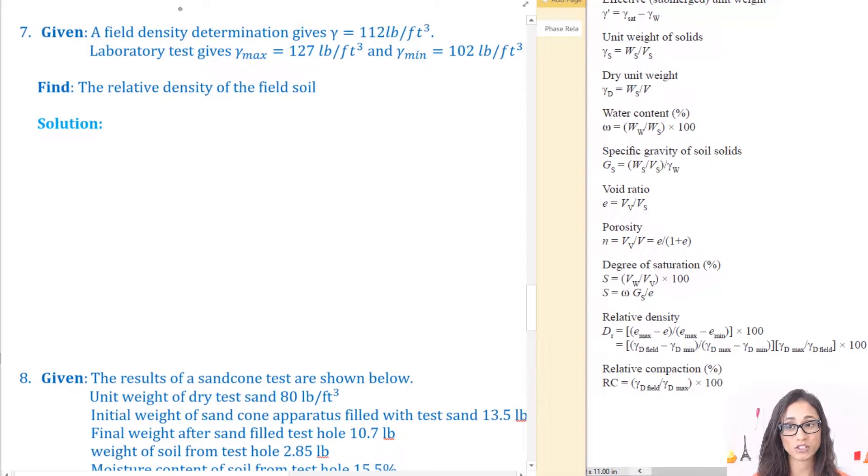We are given the unit weight for the field density which is 112 pounds per cubic feet and we were given the maximum unit weight and the minimum unit weight and we need to find the relative density of the field soil.